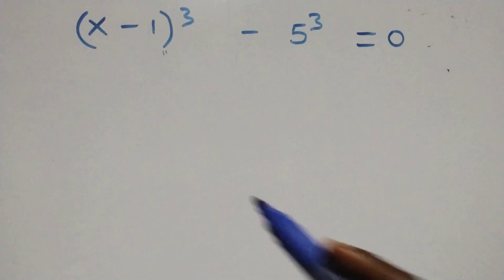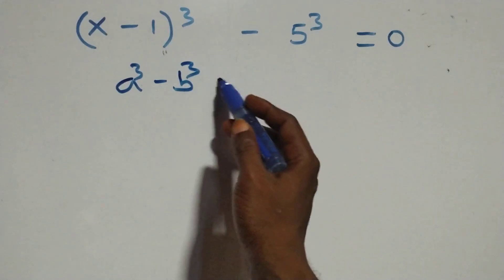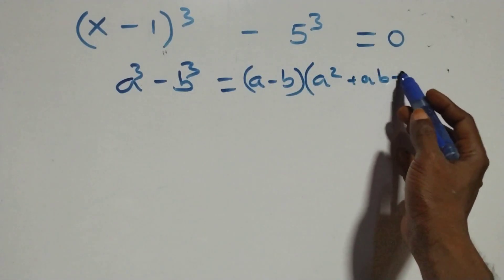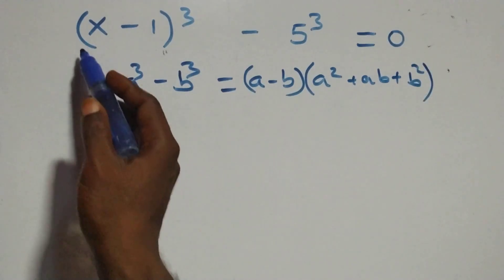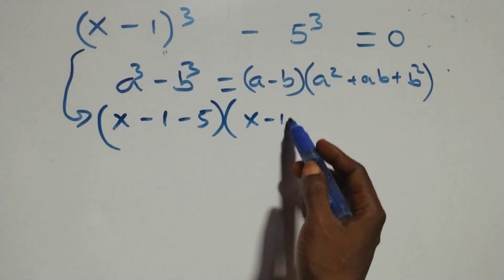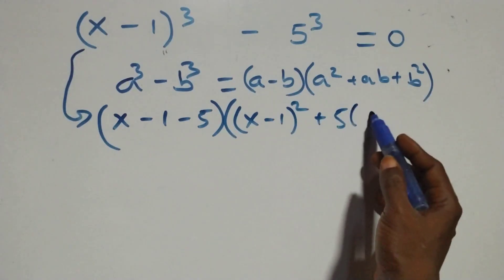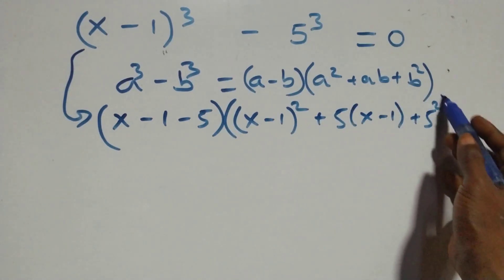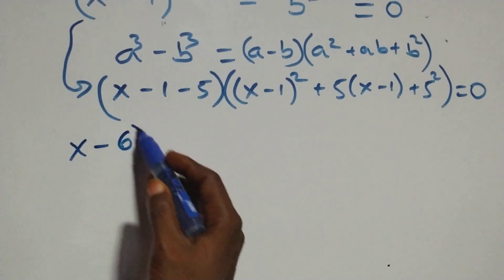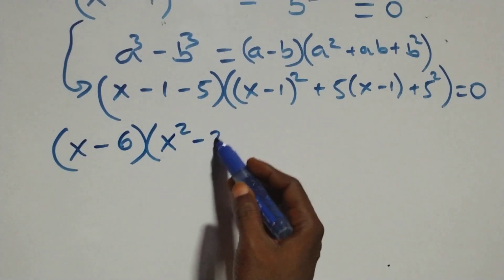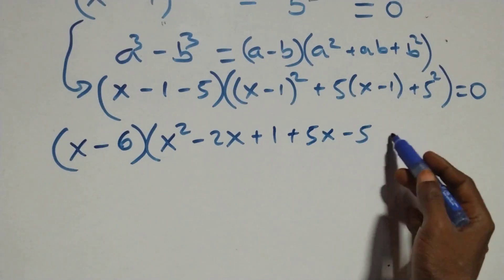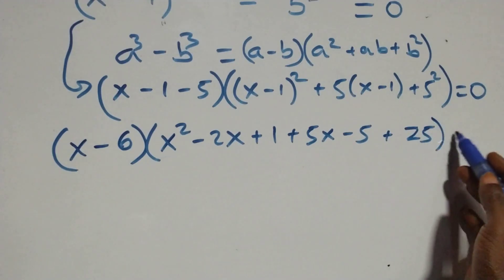Solving the second case using a³ − b³ = (a−b)(a² + ab + b²), we have: (x−1−5) times [(x−1)² + 5(x−1) + 25] equals to 0. Expanding gives (x−6)[x² − 2x + 1 + 5x − 5 + 25] equals to 0.